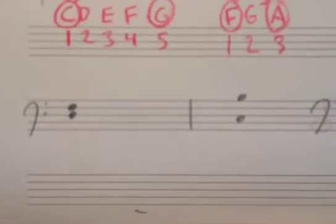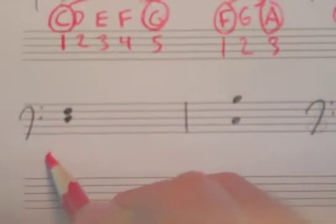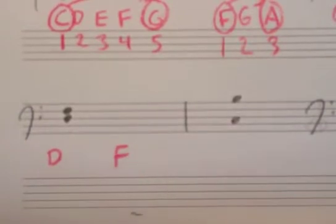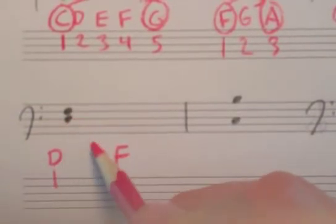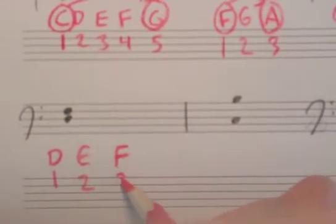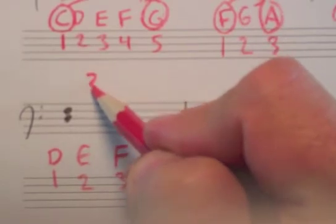Let's do some examples in the bass clef. So here we have D to F, pretty straightforward one. D is 1, E is 2, F is 3. So D to F is some sort of third.